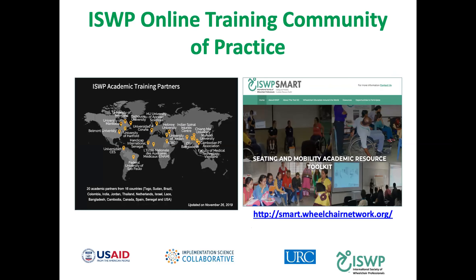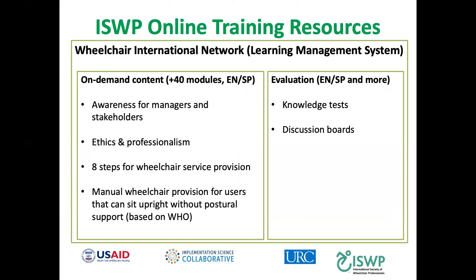ISWP has created an online training community of practice inclusive of an Academic Training Partners group. We have 20 academic partners from 16 countries who meet every other month to share barriers and facilitators to their integration process. We've also developed a Seating and Mobility Academic Resource Toolkit — SMART — which includes a filtering mechanism to filter accumulated resources by language, profession, geographic region, and type of training resource, such as syllabi, lectures, or lab activities. It is open for anyone in the world to contribute resources.